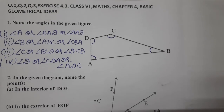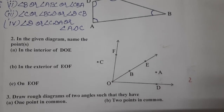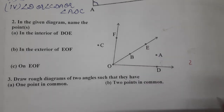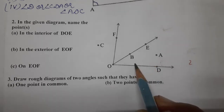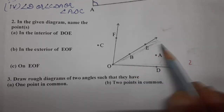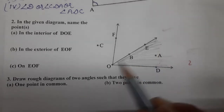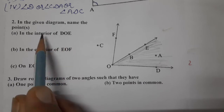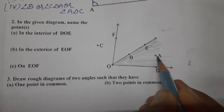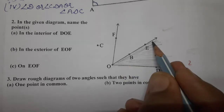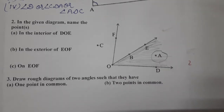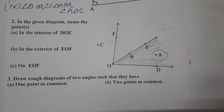Now let us move to question number 2. In the given diagram, name the points in the interior of angle DOE. First, let us see where angle DOE is — this is angle DOE, and this is the interior part. Let us shade it. Which points lie in the interior of DOE? Only point A. B and E are on the ray, so only point A is in the interior.